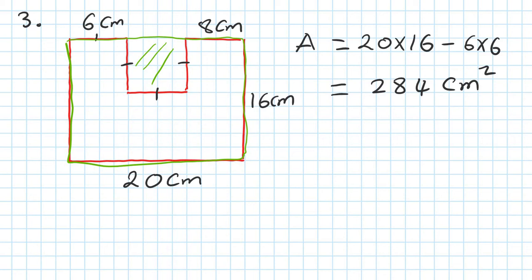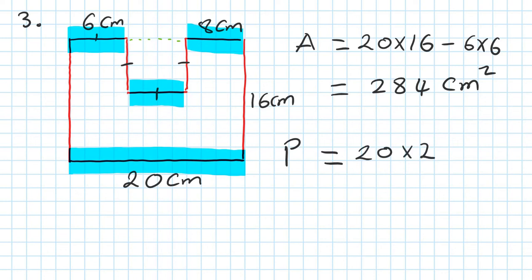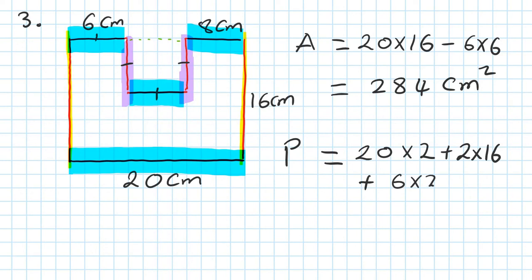Now I'm going to find the perimeter. This length is twenty, so this plus this length plus this length is also equal to twenty. So I go 20 times 2. This length all the way from here to here is sixteen, so two lots of sixteen - plus 2 times 16. I still have this one here, which is six and this one six, which is 12, or just 6 times 2. Type in the calculator and you should get 84 centimeters.